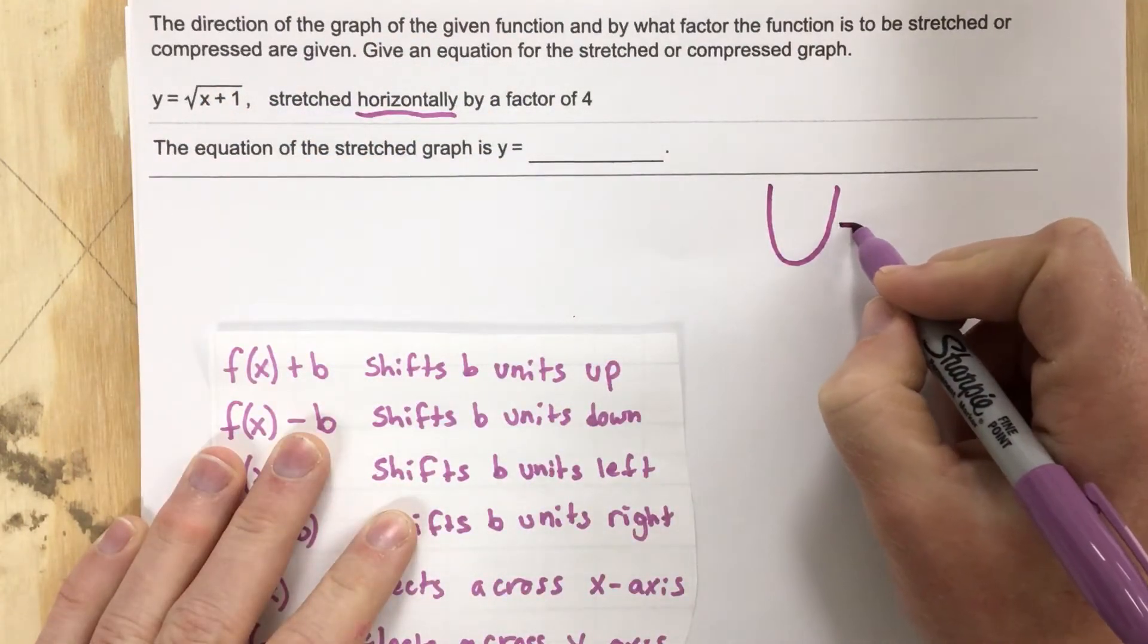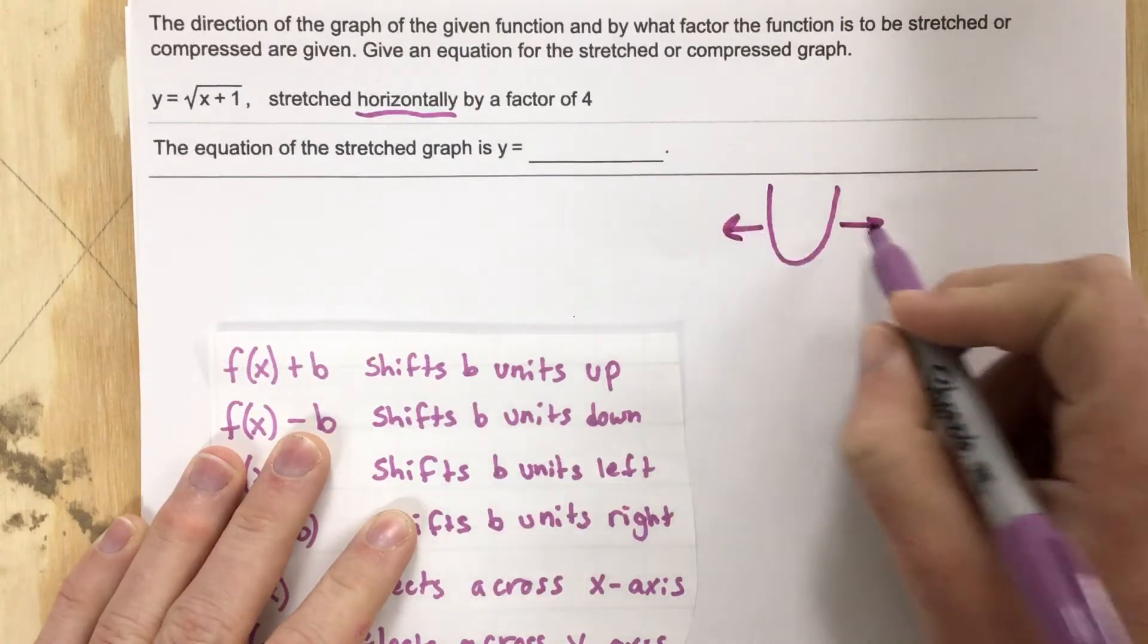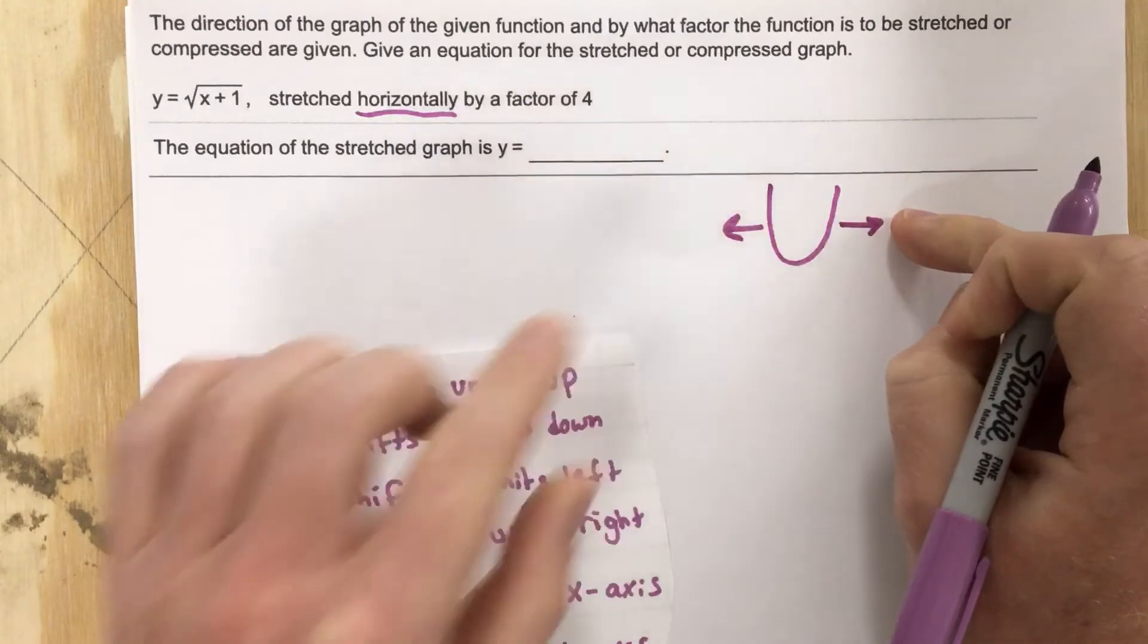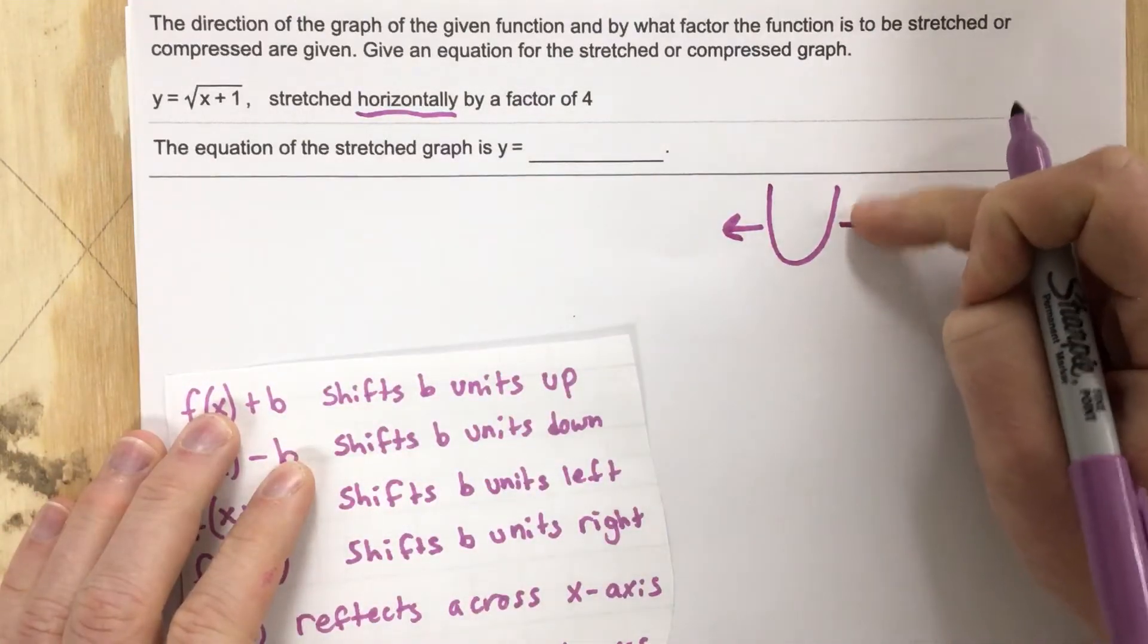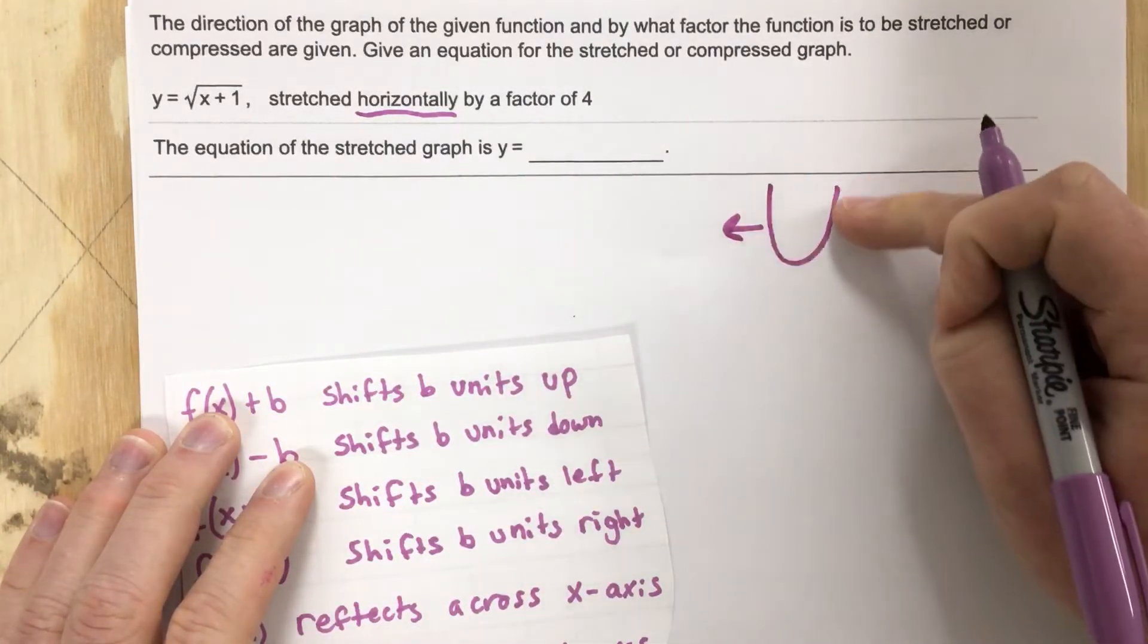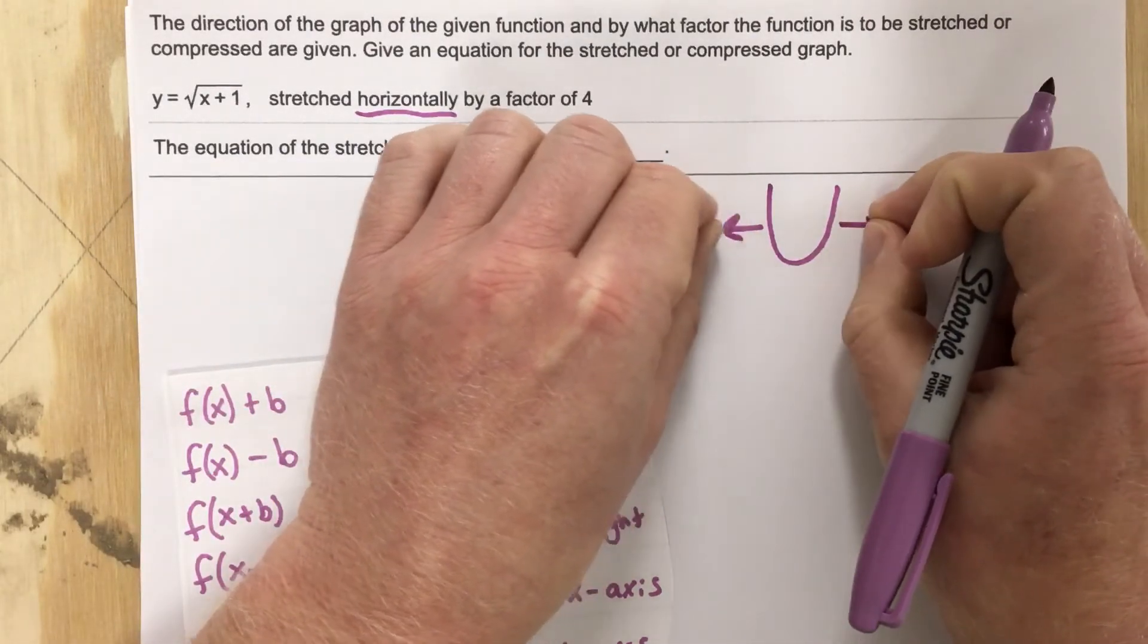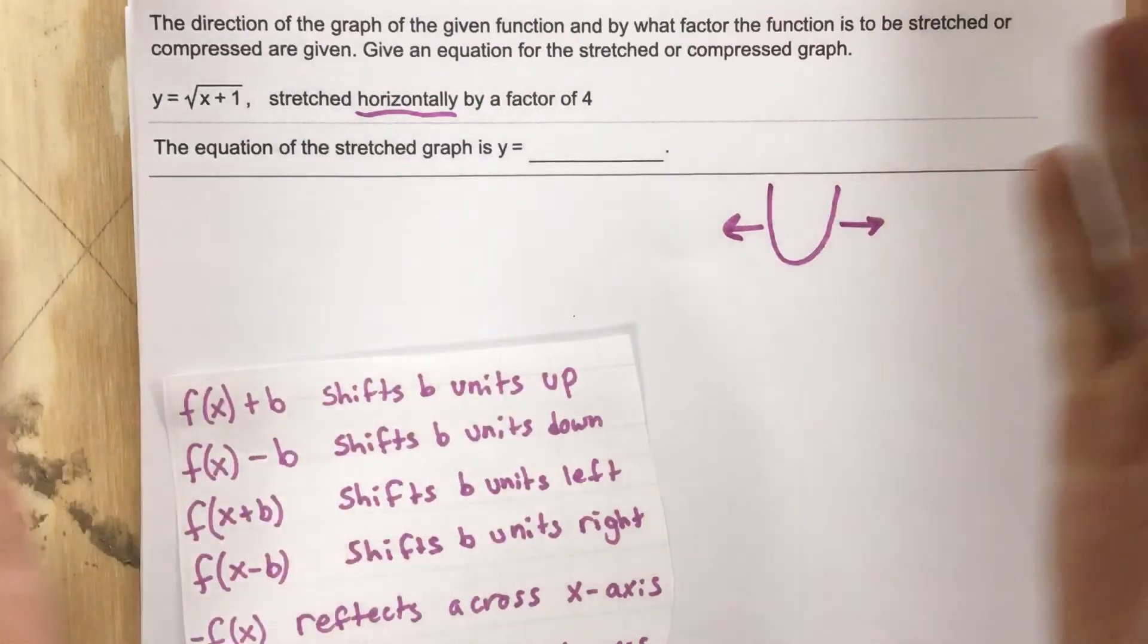If I were to stretch a parabola horizontally, I'd be pulling it this direction. And when I pull it this direction, it's going to spread itself out, which means the y values are going to decrease. They're going to go up slower as I pull this out because it's going to be more of a wider u.